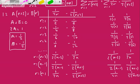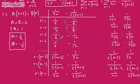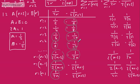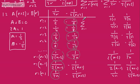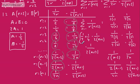We have a telescoping series — the middle is going to collapse. The minus 1/6 cancels with the 1/6, the minus 1/8 cancels with the 1/8, and so on. Working from the bottom up, the 1 over 2n cancels too. We're left with: the sum from r equals 1 to n of 1 over r(r+2) equals 1/2 plus 1/4 minus 1 over 2(n+1) minus 1 over 2(n+2).